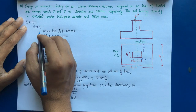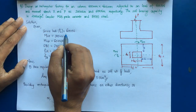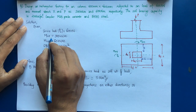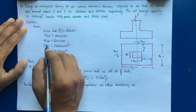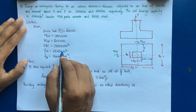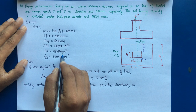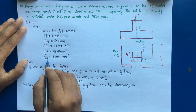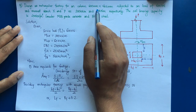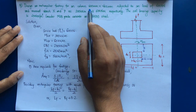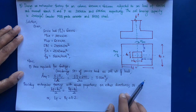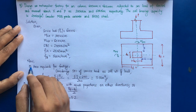Given: service load = 600 kN; service moment about X-axis = 100 kN·m; moment about Y-axis = 60 kN·m; soil bearing capacity (SBC) = 200 kN/m²; characteristic strength of concrete fck = 25 N/mm²; yield strength of steel fy = 500 N/mm². The column size is 600 mm × 400 mm, with the longer side as the width BC and shorter side as depth DC of the column.